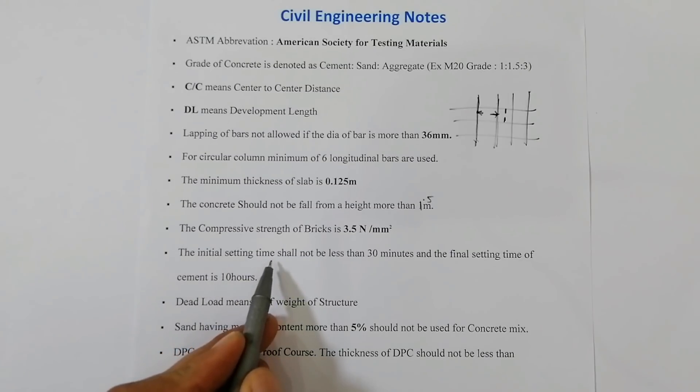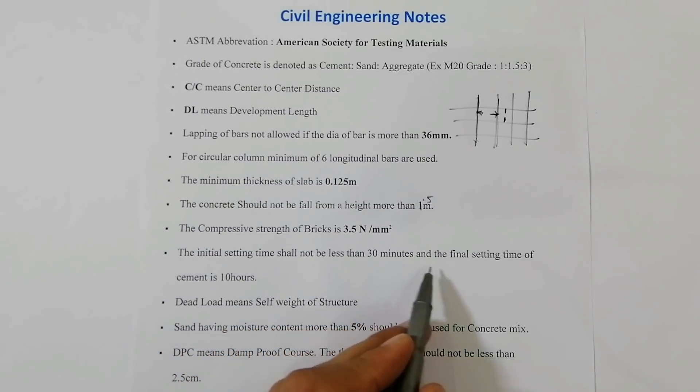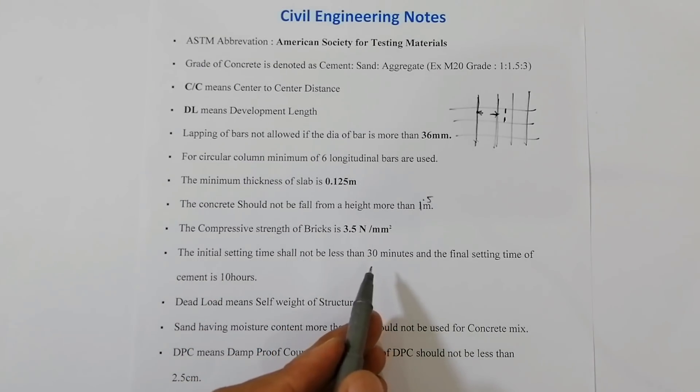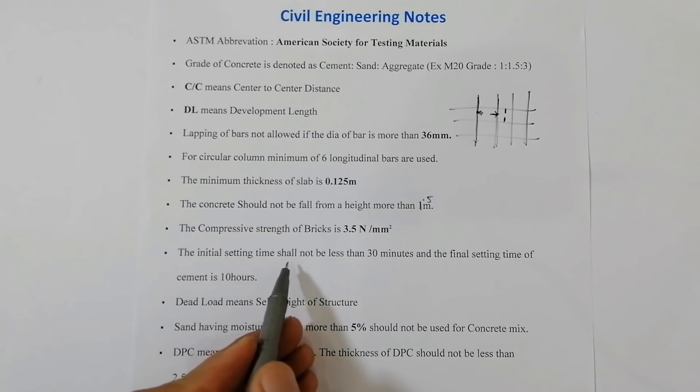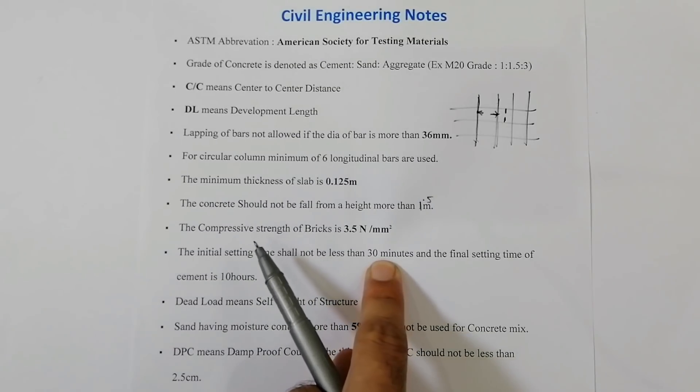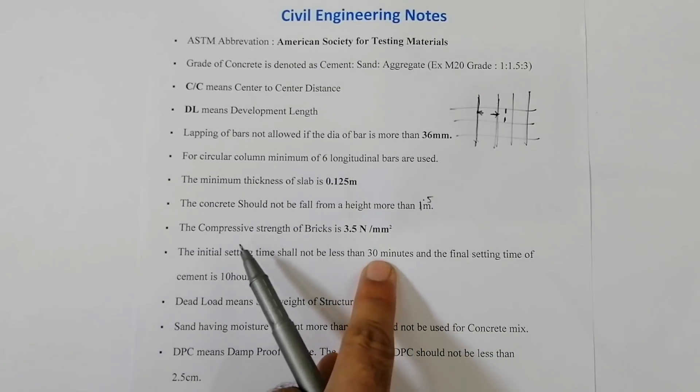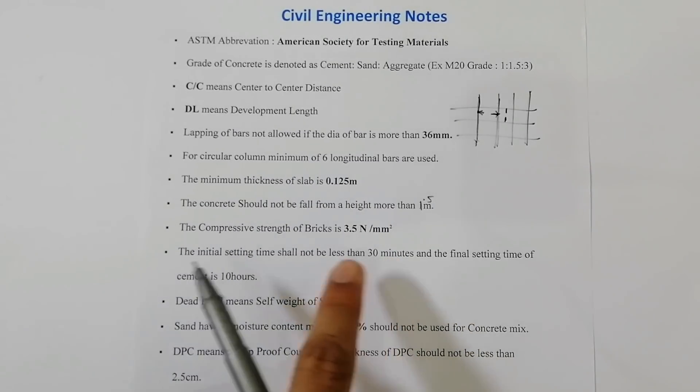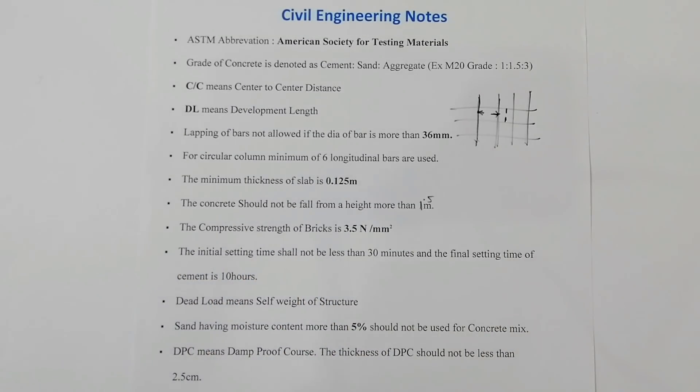The other one is the initial setting time shall not be less than 30 minutes, and the final setting time of the cement is 10 hours. We should use cement where initial setting time is not less than 30 minutes. It must be 30 minutes. If it is 25 minutes or 20 minutes, you are not able to use that cement, especially in concrete. Final time is 10 hours.